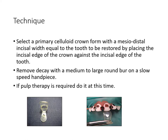To perform a strip crown, first select a crown whose mesio-distal dimension approximately equals the tooth to be restored — you can measure with a divider or place it against the tooth. Once the crown is selected, remove all decayed tooth structure from all surfaces. If decay is approaching or involving the pulp, perform a pulpotomy or pulpectomy. If not, manage deep caries by applying hard-setting calcium hydroxide in the deepest part of the cavity before continuing.